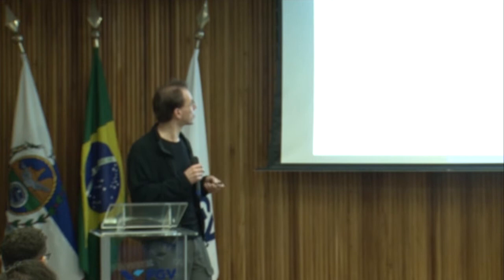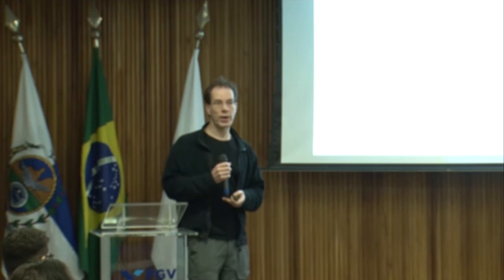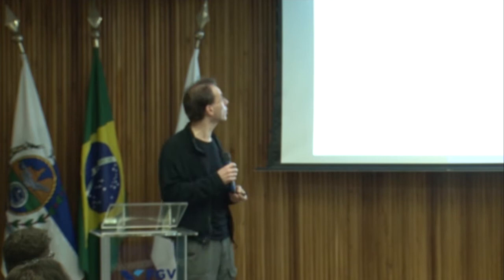What contracts do we need to consider to find the optimal contract for the principal? We can appeal to a revelation principle in this dynamic framework. An optimal contract is dynamic, direct, and incentive compatible, meaning the agent has to report information immediately after receiving it. At the contracting stage he reports type I, and later he reports theta as soon as he learns it.